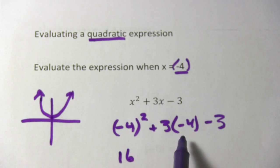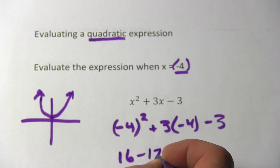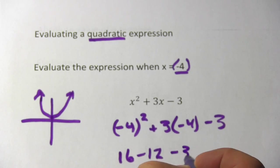3 times a negative 4 is negative 12, so plus a negative 12, that's the same thing as minus 12. And then we have minus 3.